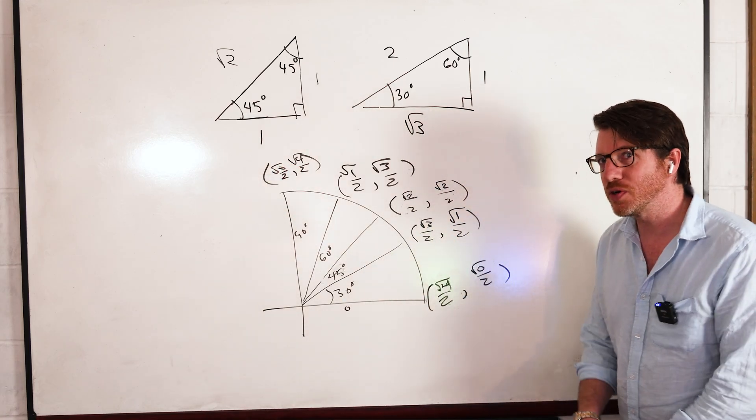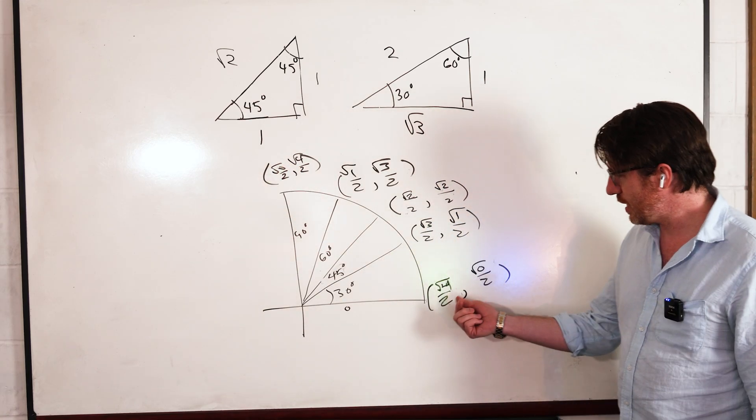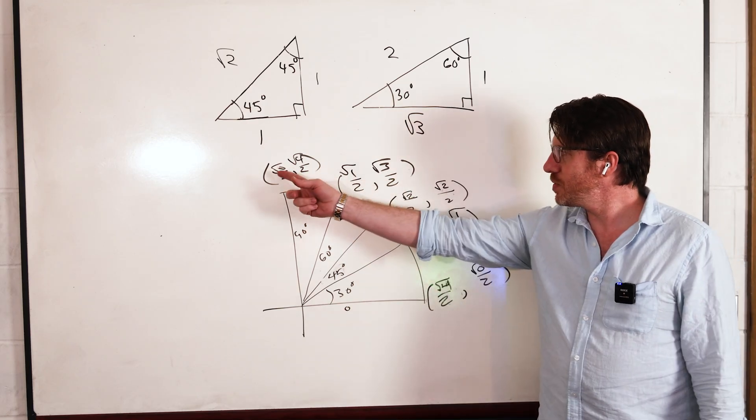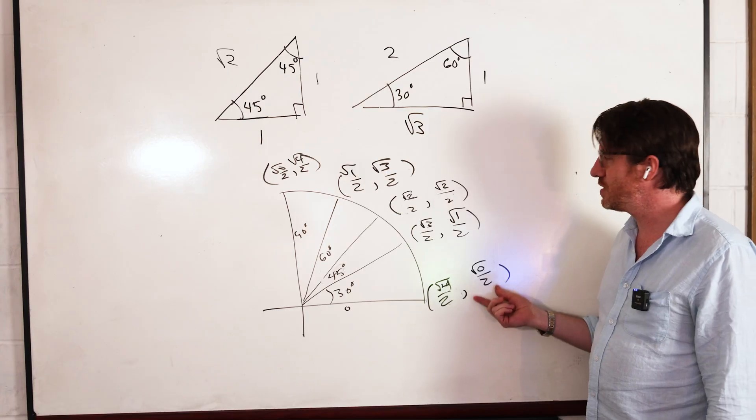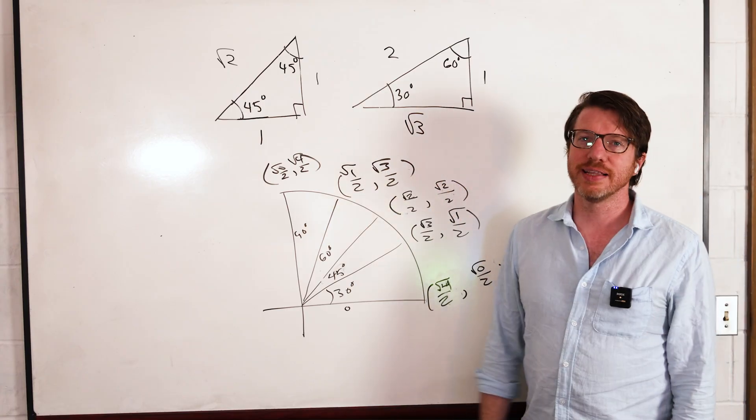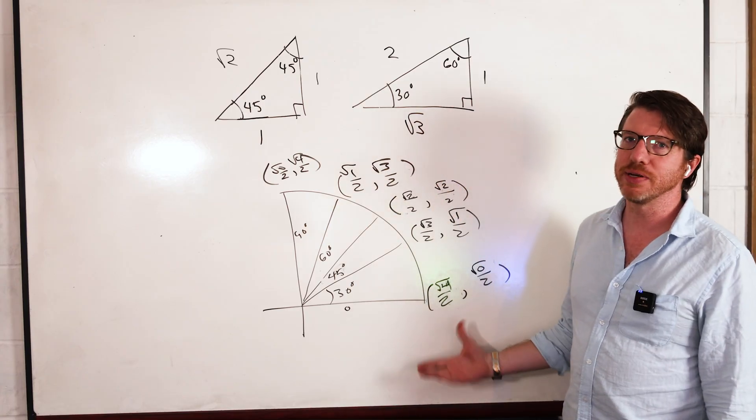All right. So now, if you want to remember your unit circle, it's super easy. Cosine counts 4, 3, 2, 1, 0, and so square root all over 2. And sine counts up. 0, 1, 2, 3, 4. That's your unit circle. That's how you should remember it. And I'm done.